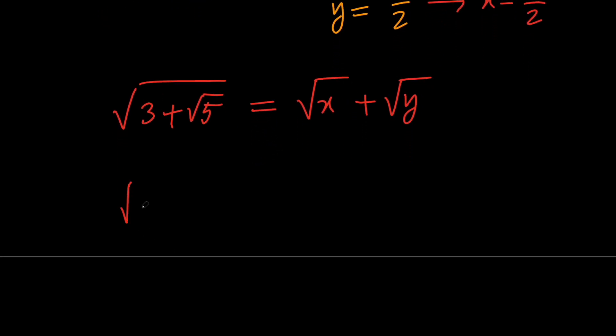So if one of x and y is 1 over 2, and the other one is 5 over 2, we can say that the square root of 3 plus root 5 is equal to the square root of 1 over 2 plus the square root of 5 over 2.